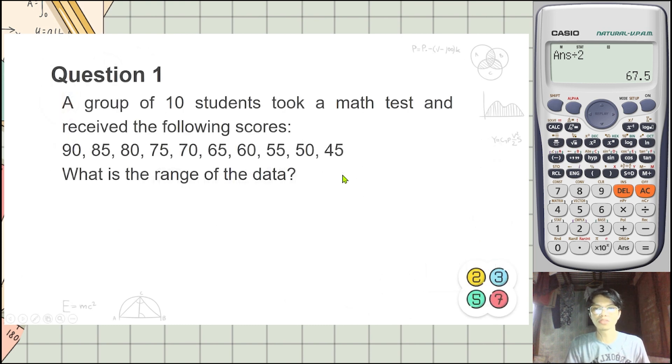Question 1. So same yung dataset na ginamit natin sa previous example ng ating mean, median, and mode. So para makuha yung range, first is enter mo muna yung data. Mode setup, then 3 stat, then 1 var. Enter mo lang lahat ng data nga yan, 90,